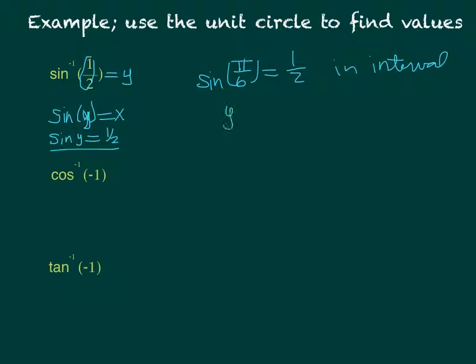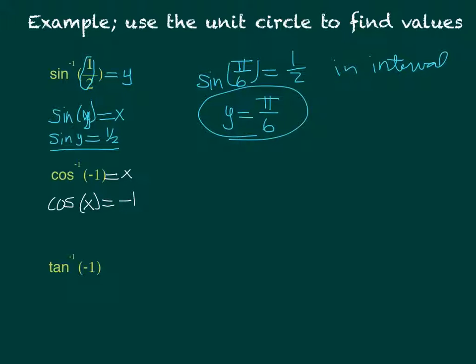For inverse cosine of negative 1, we ask: cosine of what equals negative 1, in the interval 0 to pi? On the unit circle, cosine of pi equals negative 1, and pi is in our interval, so the answer is pi.